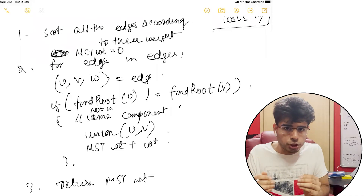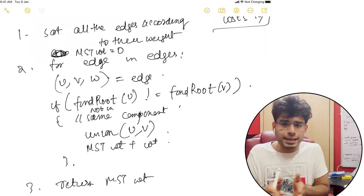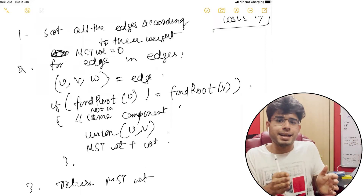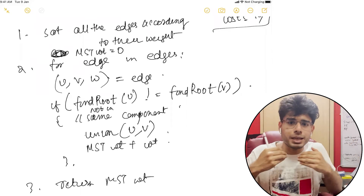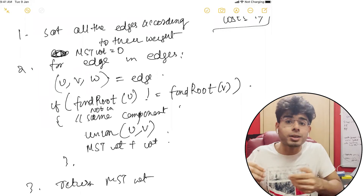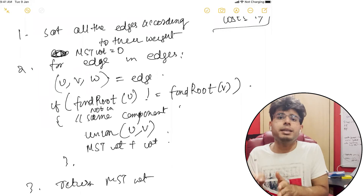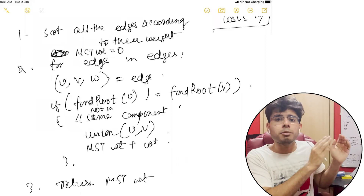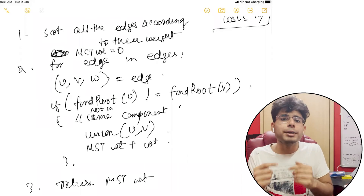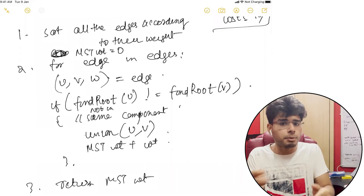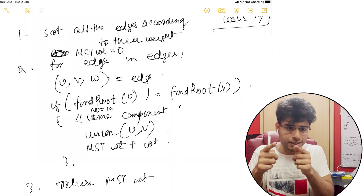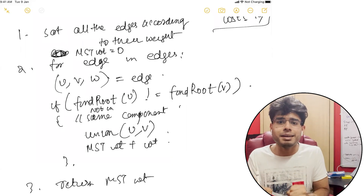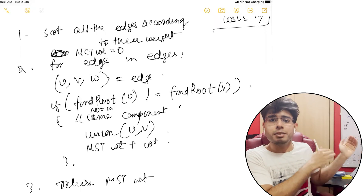For every edge, we check: are they already connected? If they're already connected, since they were already sorted, they must be connected with some minimum cost — because you are traversing the edges in sorted order. So if U and V are already connected, I can safely say they must have been connected before with some minimum cost, and I'm not going to get a better cost going forward.